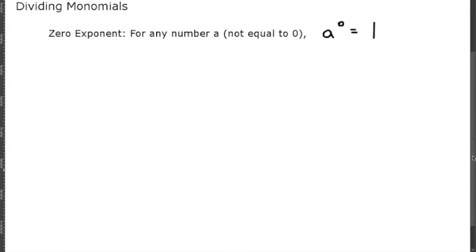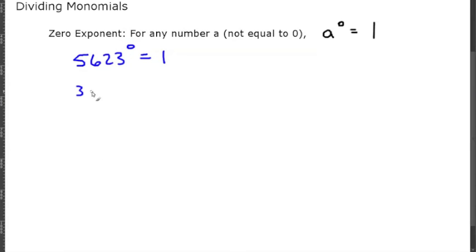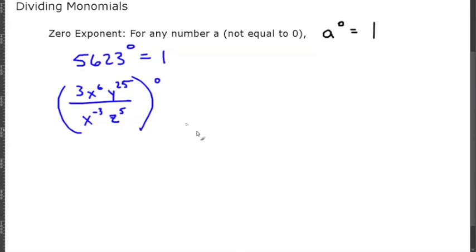There is one more key rule to remember: for the zero exponent, any number a that's not equal to zero raised to the 0 is going to equal 1. So if I have the number 5623 and raise that to the 0, the answer is just 1. Likewise, 3x to the sixth y to the 25th over x to the negative 3 z to the fifth, all raised to the 0, is also just going to be 1.